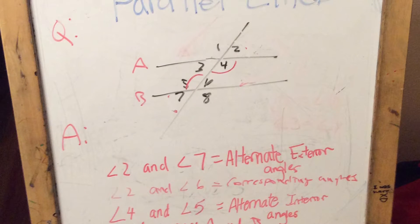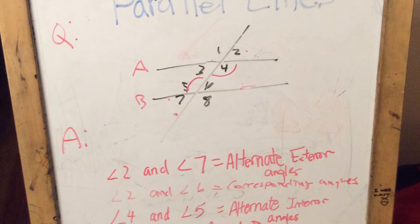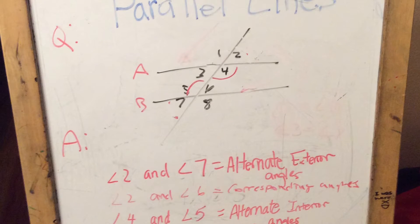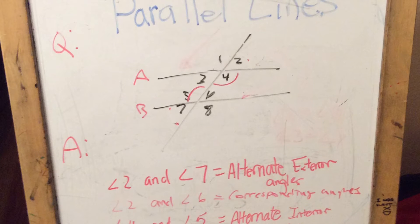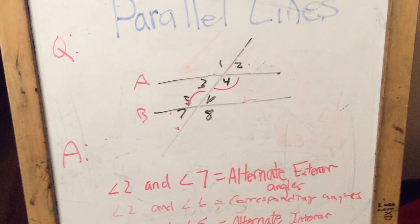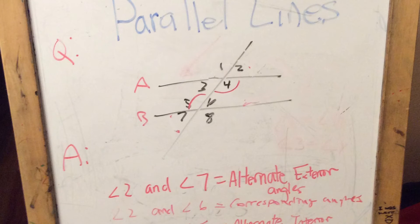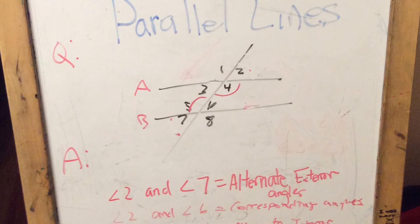Angle 4 and angle 5 are alternate interior angles because, as you can see, angle 4 and 5 are inside the two lines that are cut by the transversal. Therefore, they are alternate interior angles.